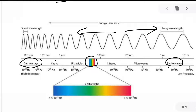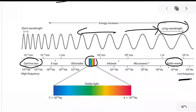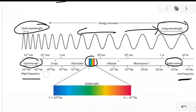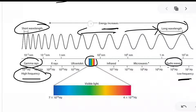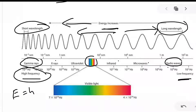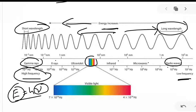In the other direction, wavelength increases. Long wavelength implies low frequencies, and short wavelength implies high frequencies. High frequency implies high energy — E is equal to h-nu. So if frequency is more, energy will be more. Therefore, gamma rays have the highest frequency and hence the highest energy.